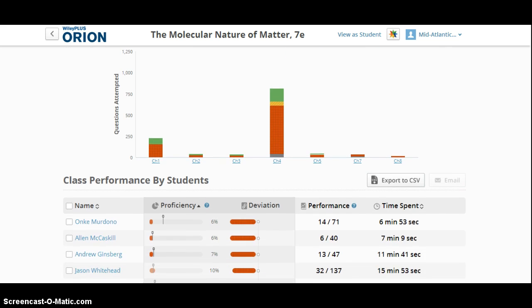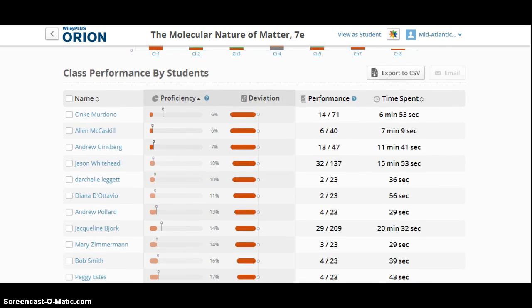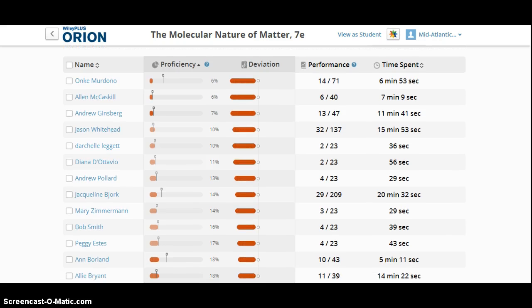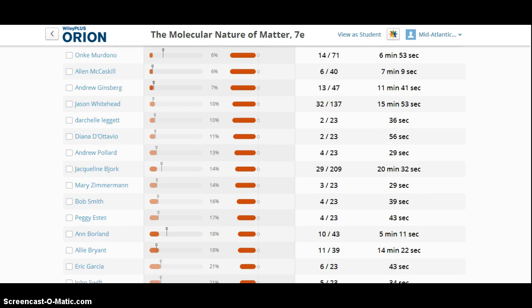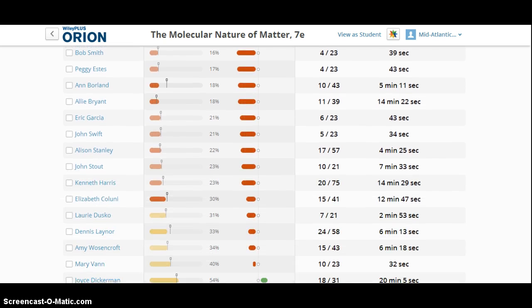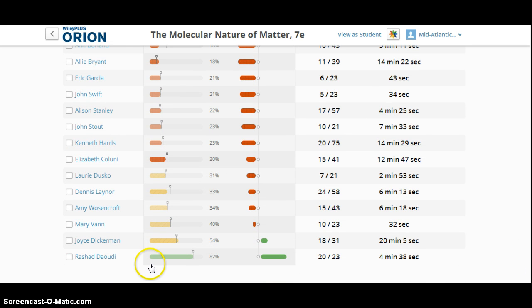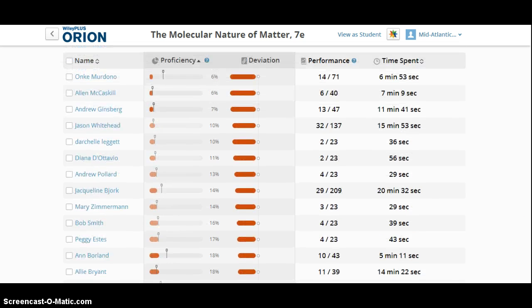If we were to click back to the high-level class performance by chapters, below your class graph are listed all of the students that have completed the questions. Here, you can see that Anke Mordano is the least proficient student in the class. And if we were to scroll down, you can see that Rashad Doughty is the most proficient student with 82% proficiency. So, again, a clear view of how each individual student is doing in this particular chapter.